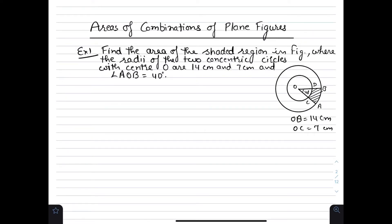We have calculated the area of figures taken separately. Now I will explain the method of finding the area of combined plane figures involving triangles, simple quadrilaterals, and circles, etc.